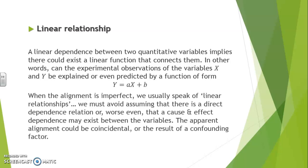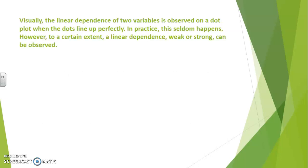When the alignment is imperfect, we usually speak of linear relationships rather than a linear dependency. We must also avoid assuming that there is a direct dependence relationship, or even worse, a cause-and-effect dependence between the variables. The apparent alignment could be coincidental or the result of a confounding factor. In practice, a linear relationship — weak or strong — can be observed on a scatter plot, though perfect alignment seldom happens.